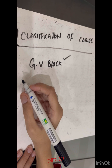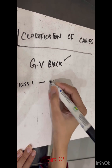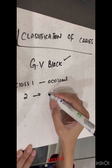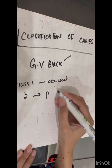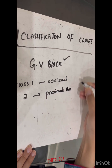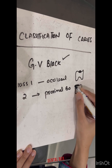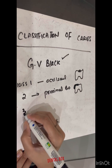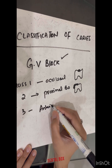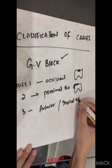GV Black's classification is divided into six classes. Class 1 involves the occlusal surface of the posterior teeth. Class 2 involves the proximal surface along with the proximal box of the posterior teeth. Class 3 is on the anterior teeth but does not involve the incisal edge.